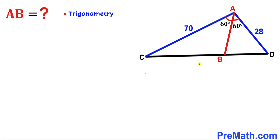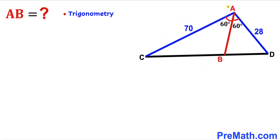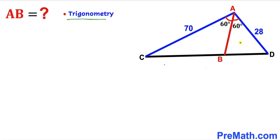Welcome to pre-math. In this video we have got triangle ABD along with angle bisector AB, such that side length AC is 70 units, side length AD is 28, angle CAB is 60 degrees, and angle DAB is 60 degrees as well. Our task is to calculate the AB length — the angle bisector — and we will be using trigonometry to solve this problem.